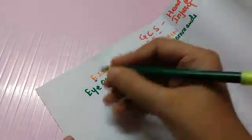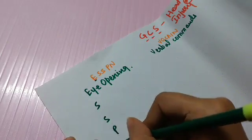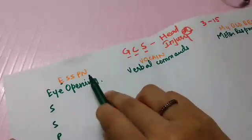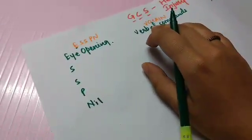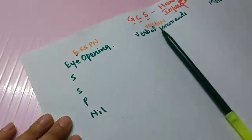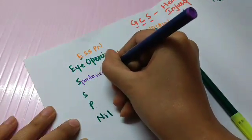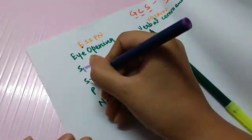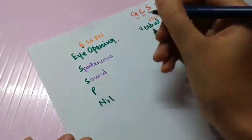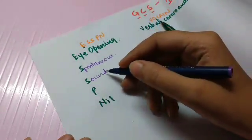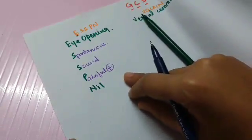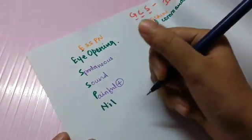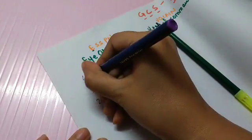Coming down to the components, the E in ESSPN is for eye opening. Each part of the mnemonic ends with an N, and N stands for nil. So it goes: S is spontaneous eye opening, S is eye opening on sound — you call the patient and ask them to open their eyes, P is eye opening on painful stimulus, and N is nil — no eye opening. We score each one as 4, 3, 2, and 1.